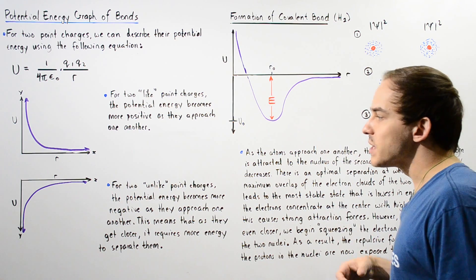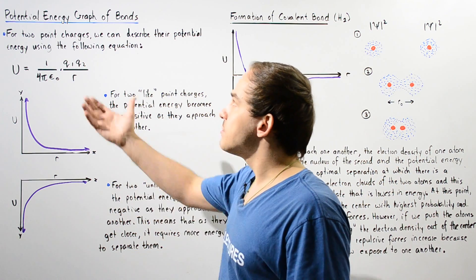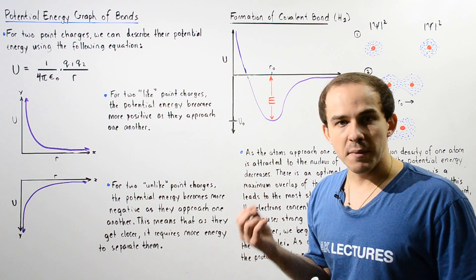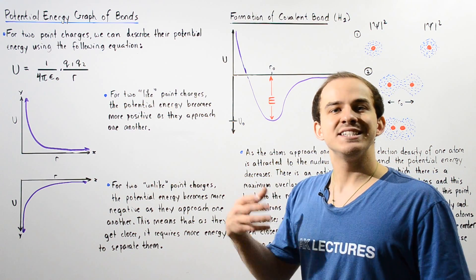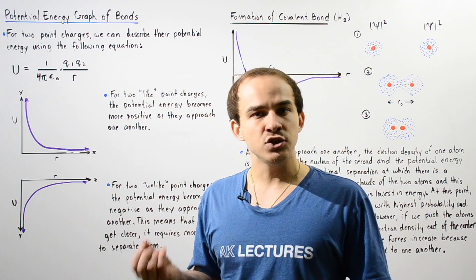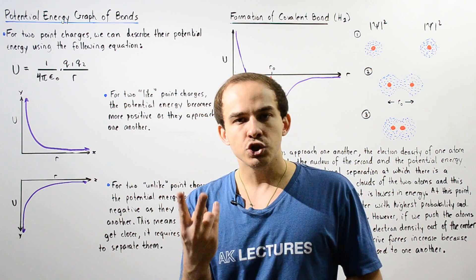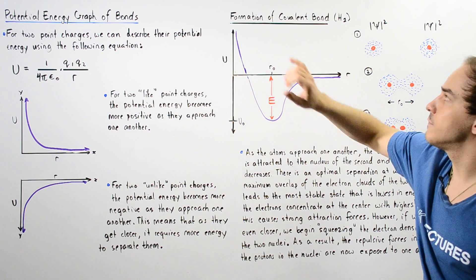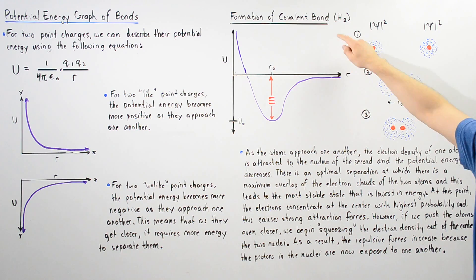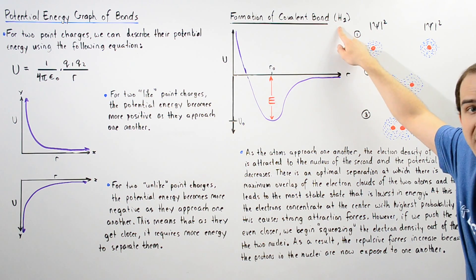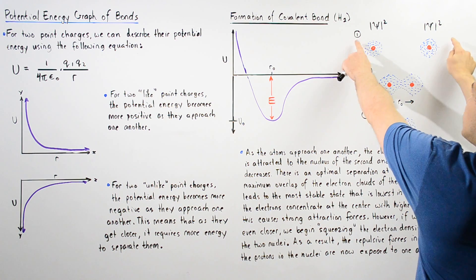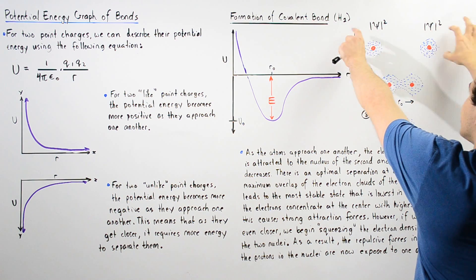Now, let's actually describe the potential energy diagram for the formation of the simplest covalent bond between two H atoms — the covalent bond inside the diatomic hydrogen molecule. Let's begin with diagram one.